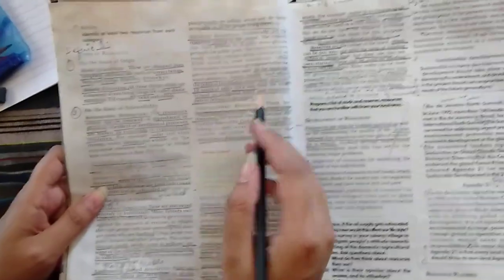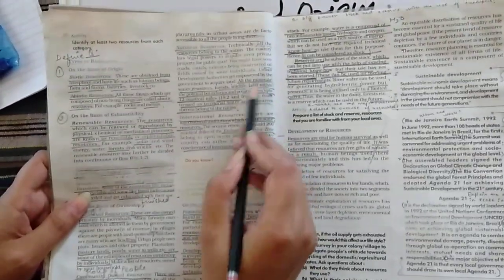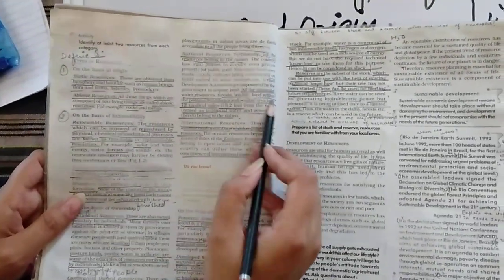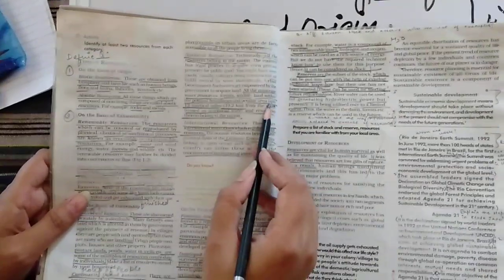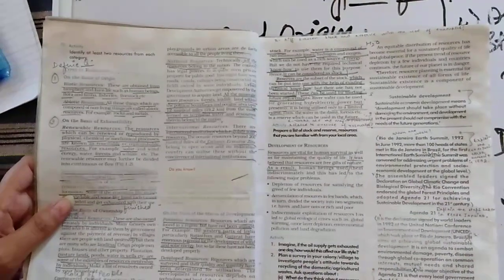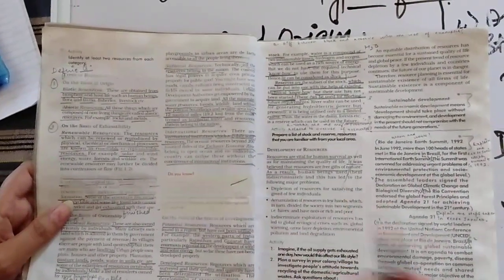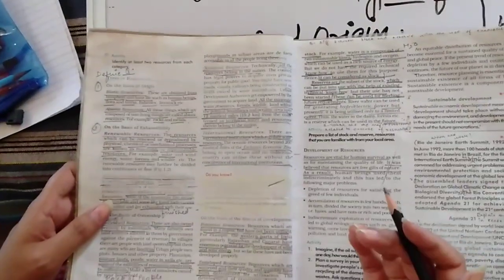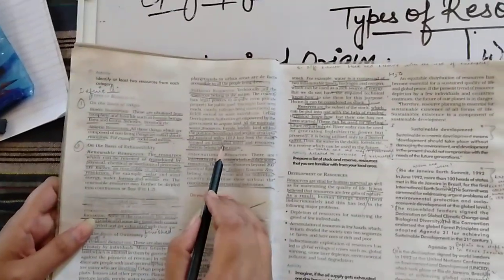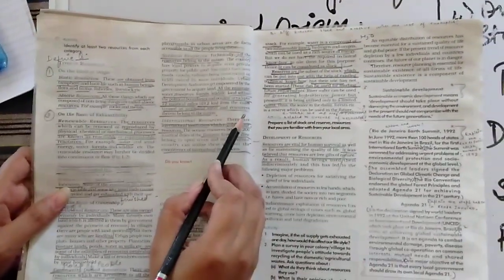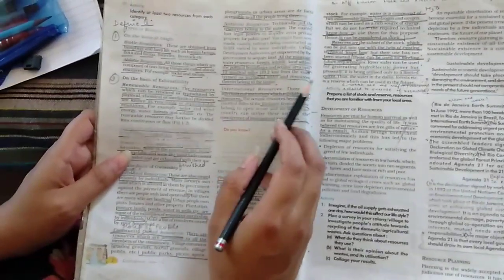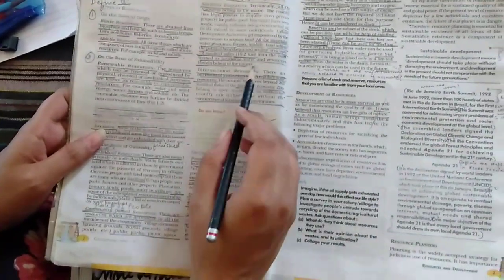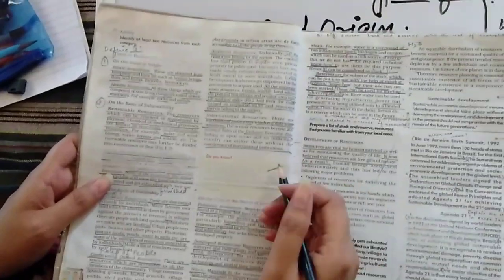For example, all the minerals, water resources, forest, wildlife, land within the boundaries, and oceanic areas, up to 12 nautical miles, that is almost 19.2 kilometers. This whole area, coast ke baad, ocean ka 19.2 kilometers tak, humare territorial waters mein include kiya jata hai. The resources which are found on those particular areas are known as national resources or they belong to that particular country.